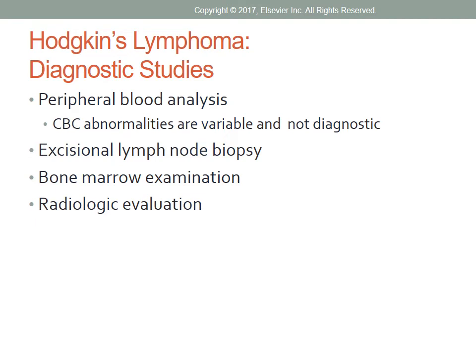Evaluation of Hodgkin's lymphoma can be done through analysis of peripheral blood, excisional lymph node biopsy, bone marrow examination, and radiologic studies. Abnormalities in CBC, such as microcytic hypochromic anemia, are variable and not diagnostic. Leukopenia and thrombocytopenia may develop, but they are usually a consequence of treatment, advanced disease, or superimposed hypersplenism. Other blood studies may show elevated erythrocyte sedimentation rate, elevated leukocyte alkaline phosphatase from liver and bone involvement, hypercalcemia from bone involvement, and hypoalbuminemia from liver involvement. Radiologic evaluation helps define all sites and determine the clinical stage. A PET scan with CT scan is used to stage and assess the response to therapy and to differentiate residual tumor from fibrotic masses after treatment.